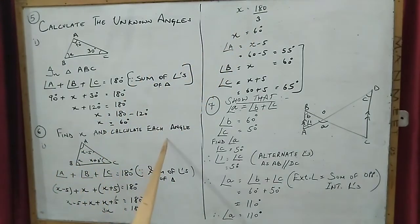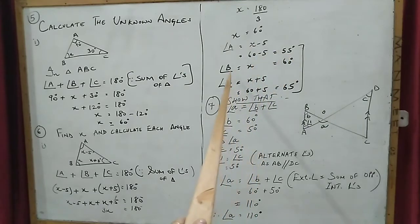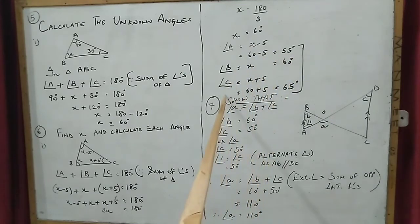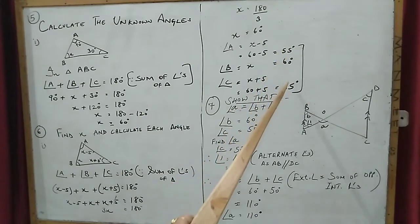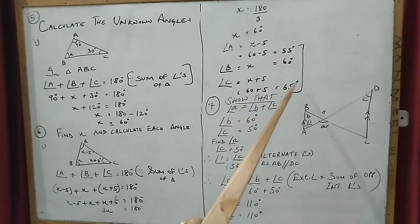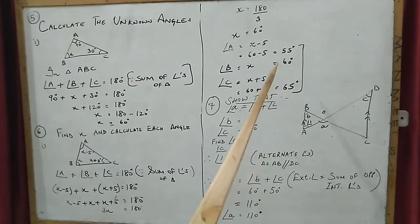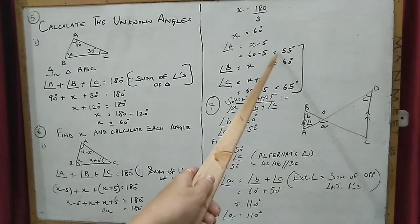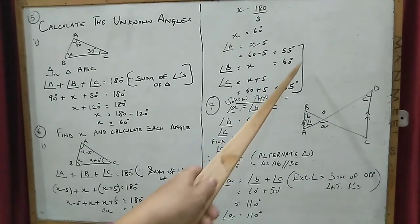With x equal to 60, we calculate each angle: angle A is x minus 5, which is 60 minus 5 equals 55 degrees; angle B is x, which is 60 degrees; angle C is x plus 5, which is 65 degrees. Verification: 55 plus 60 is 115, plus 65 is 180 degrees — the answer is correct.